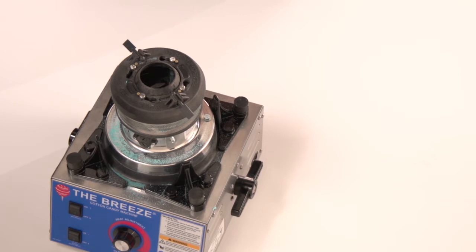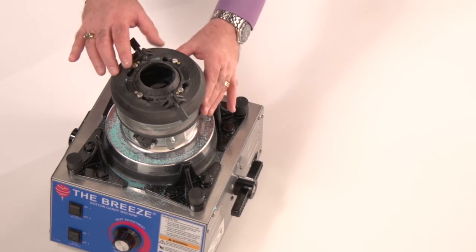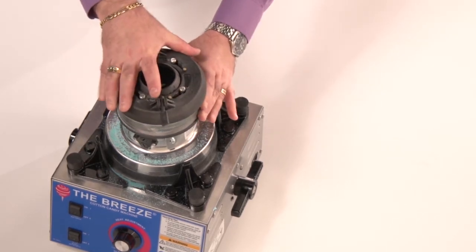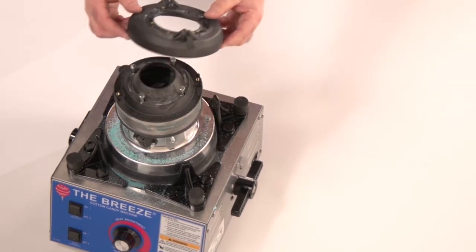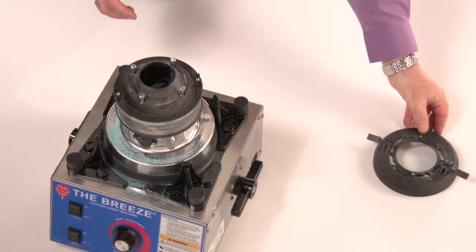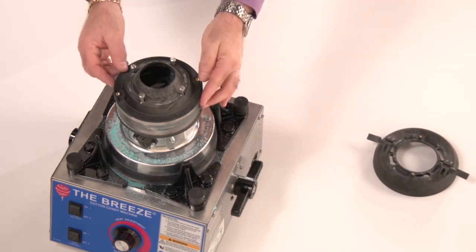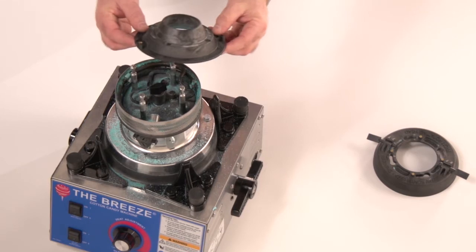This entire spinner head can be disassembled for cleaning without the use of any tools. To remove the top cap, simply push down on the cap and turn it and lift the cap off. Next, lift the spinner cap straight off of the machine.